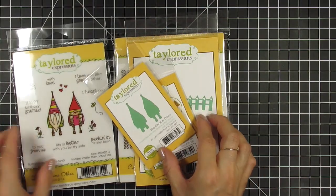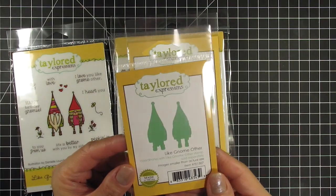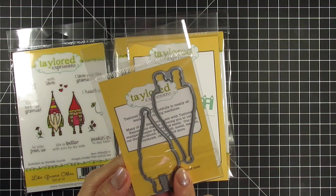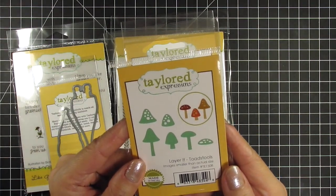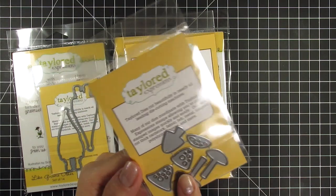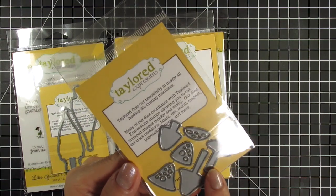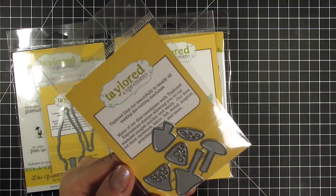Also included are the Like Gnome Other dies which cut out the two gnomes. Next is the Layer It Toadstools dies which are so super cute. You get three sizes of mushrooms which you can die cut and ink blend or color to create realistic mushrooms for your scenes.